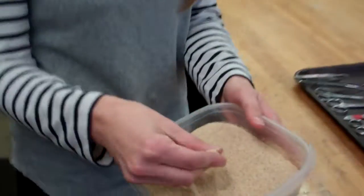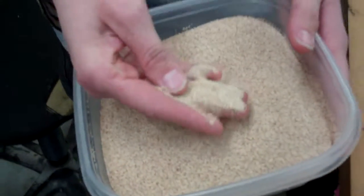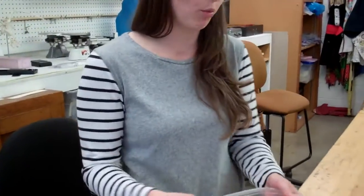We use ground-up corn cob dust to keep our hands clean, keep the feathers clean and dry, and to absorb moisture during the prep process.